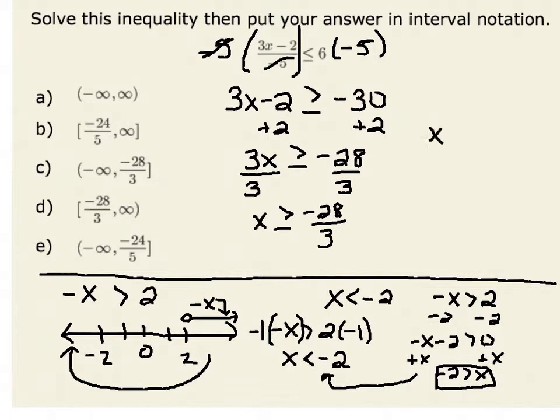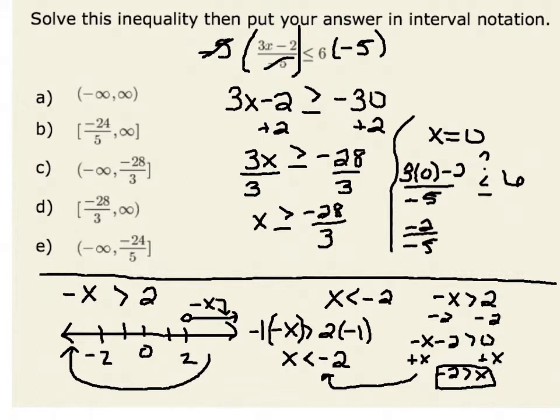For example, I know that x equal to 0 is definitely greater than negative 28 thirds. When I plug in 0 or substitute 0 back into my original inequality, I have 3 times 0 minus 2 all over negative 5, and I want to verify that that is indeed less than or equal to 6. Well, 3 times 0 is 0, so I am left with negative 2 divided by negative 5. Negative 2 divided by negative 5 is equal to positive 2 fifths, and positive 2 fifths is definitely less than or equal to 6.